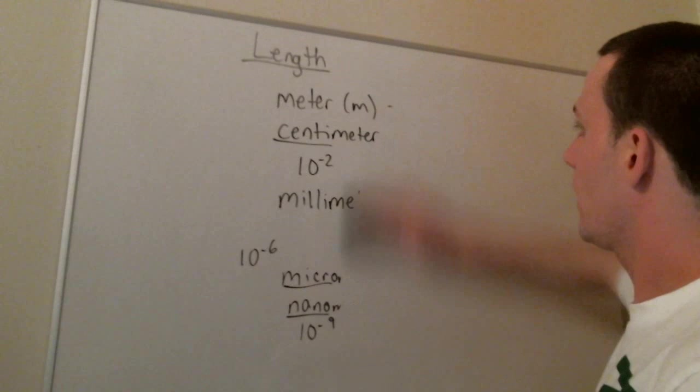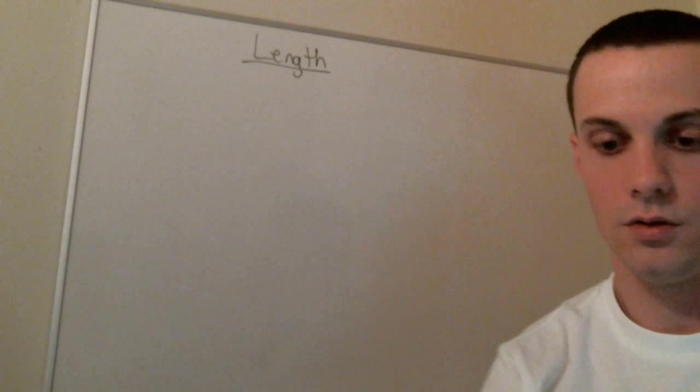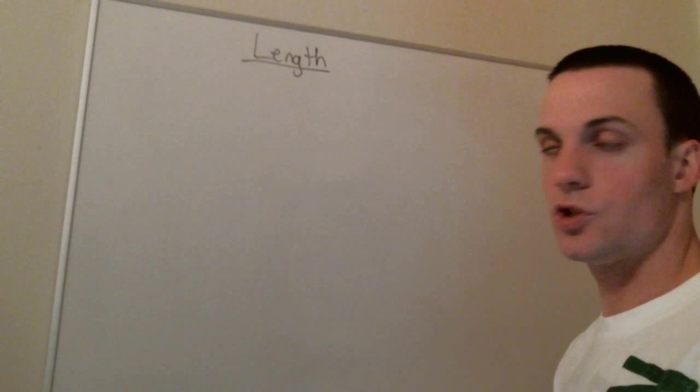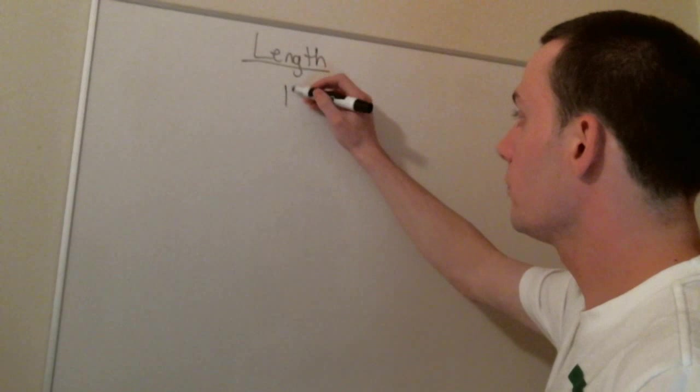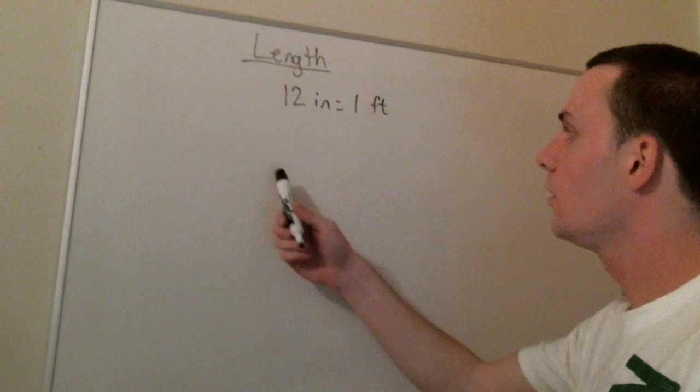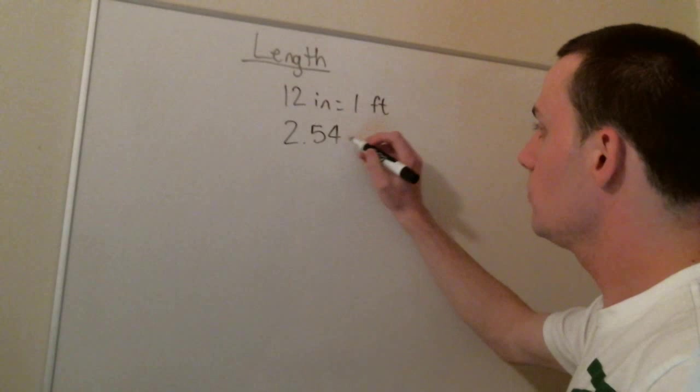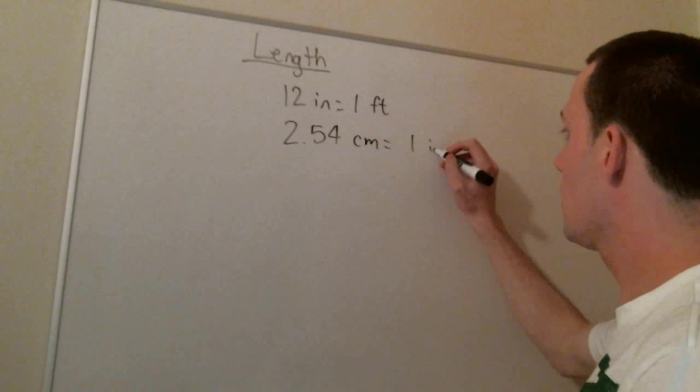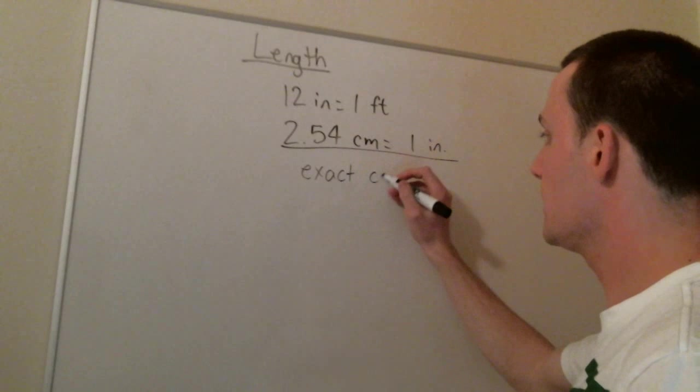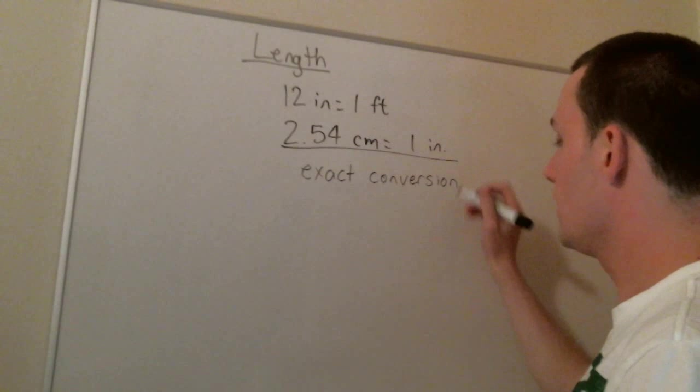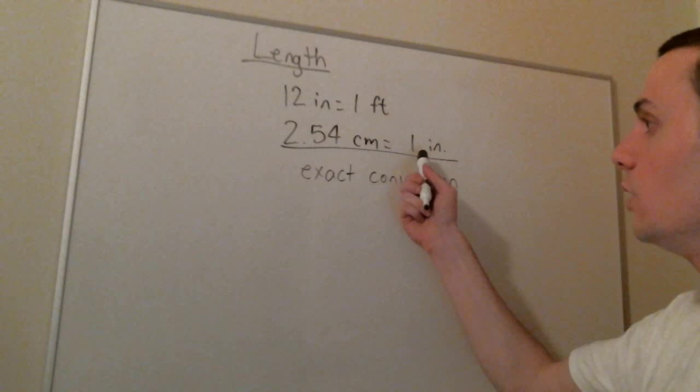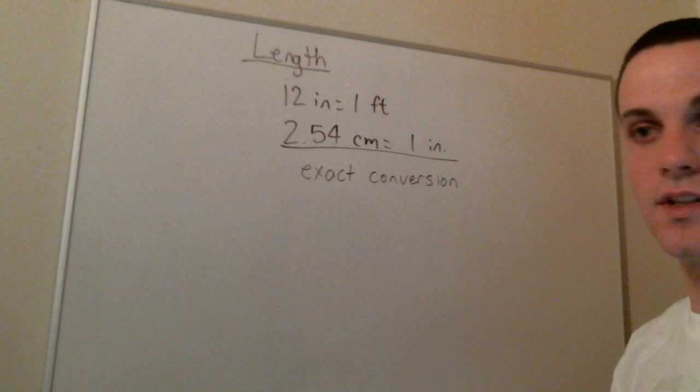Let's take a look now at some conversions that we typically see with length. And really, there's only two that you should absolutely know. One you probably already know. There's 12 inches in one foot. That's pretty simple. The other one is that there's 2.54 centimeters in one inch. And this conversion here is an exact conversion. This isn't an approximation. There's actually 2.54 centimeters in one inch, which is something useful to know.